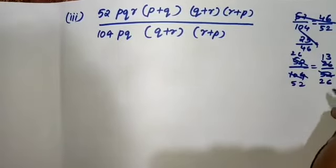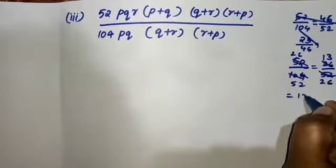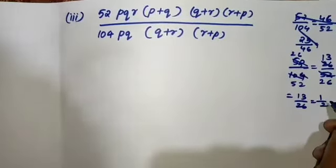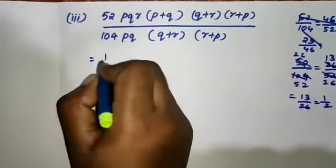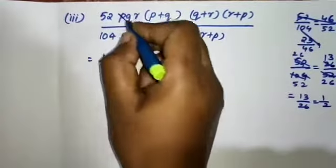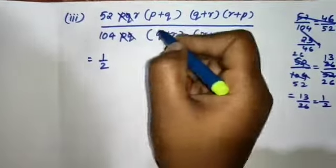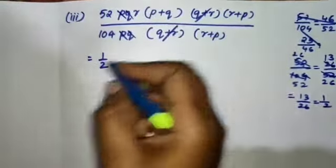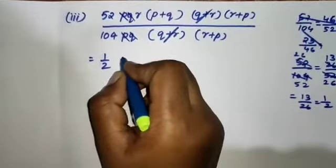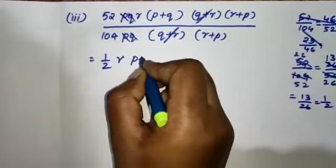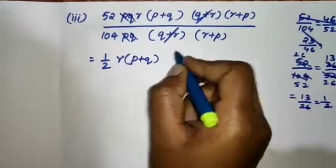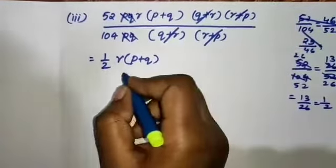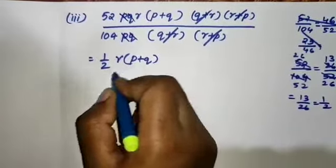13 by 26 is 1 by 2. P and P cancel, Q and Q cancel, Q plus R cancel. So the result is 1 by 2 into r into p plus q. R plus P and R plus P cancel, giving 1 by 2 into r into p plus q.